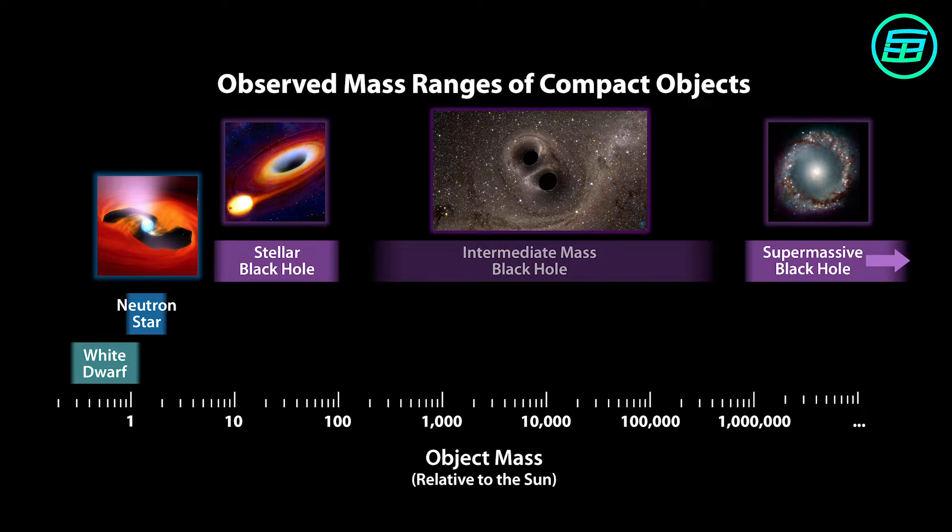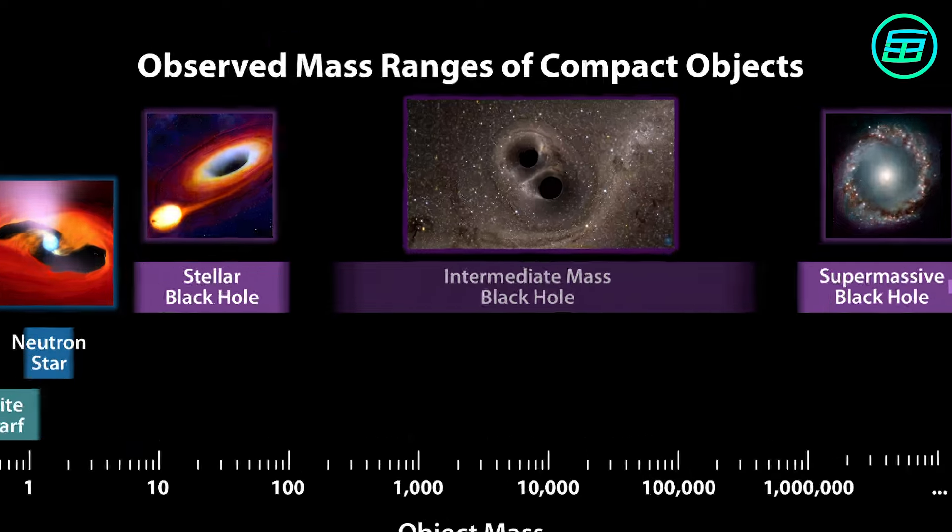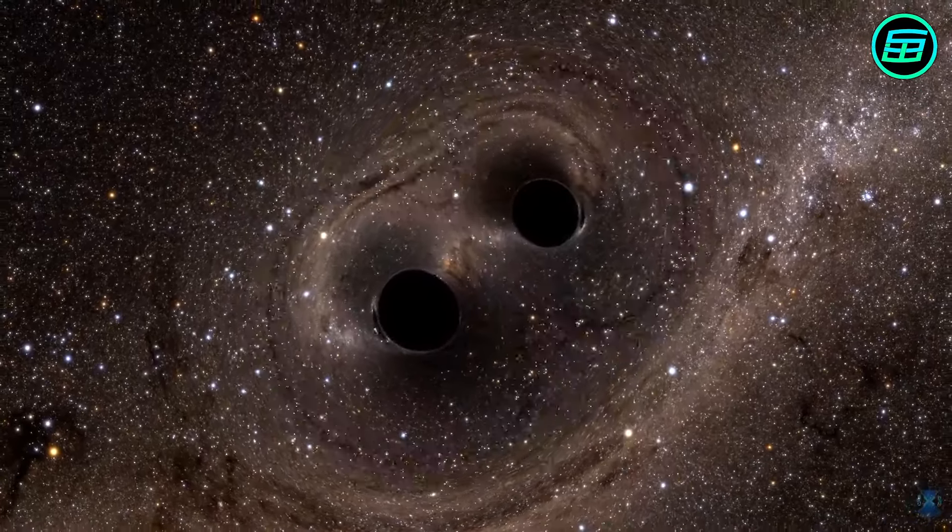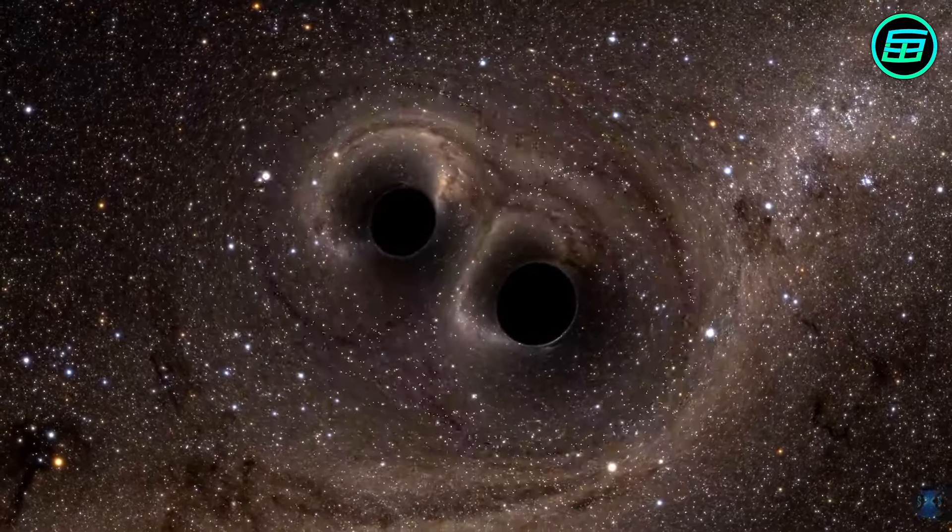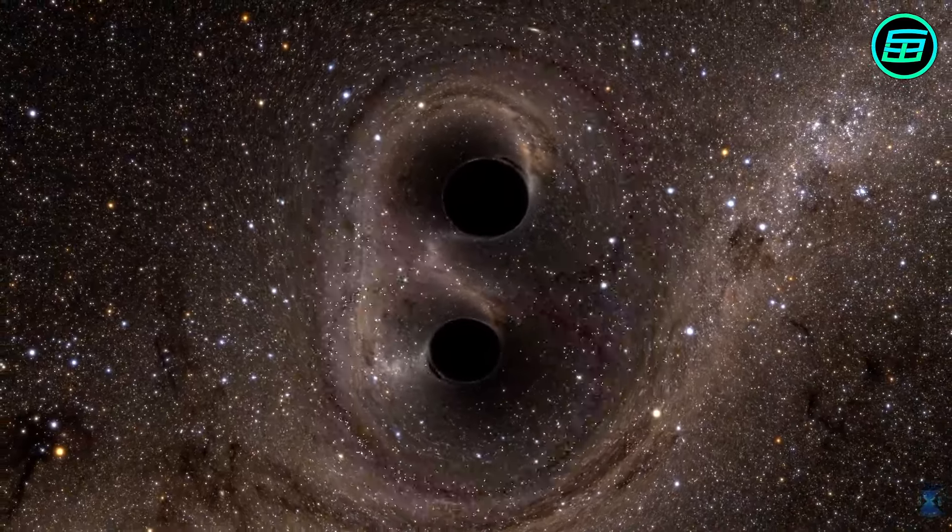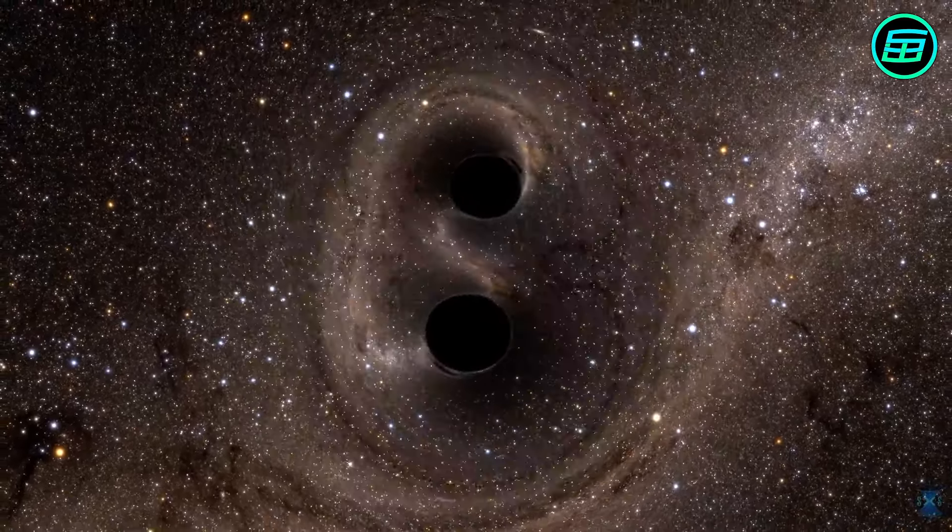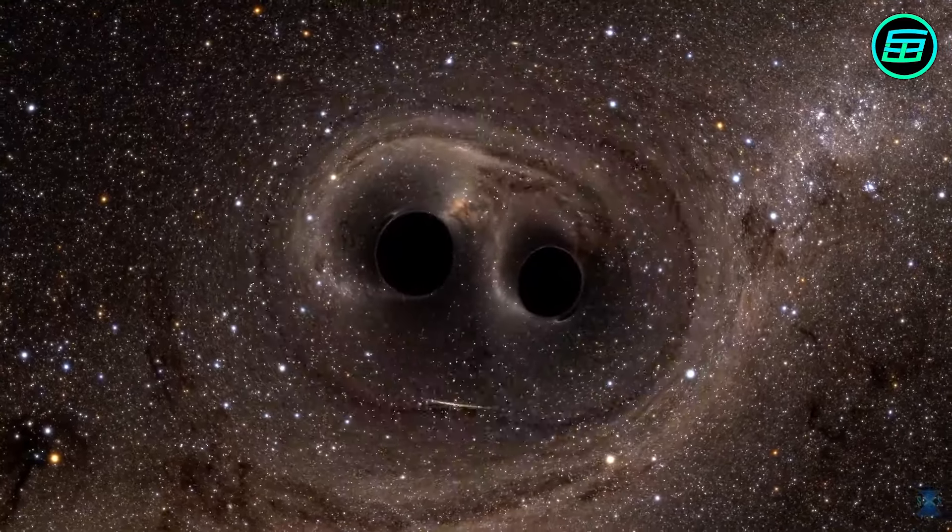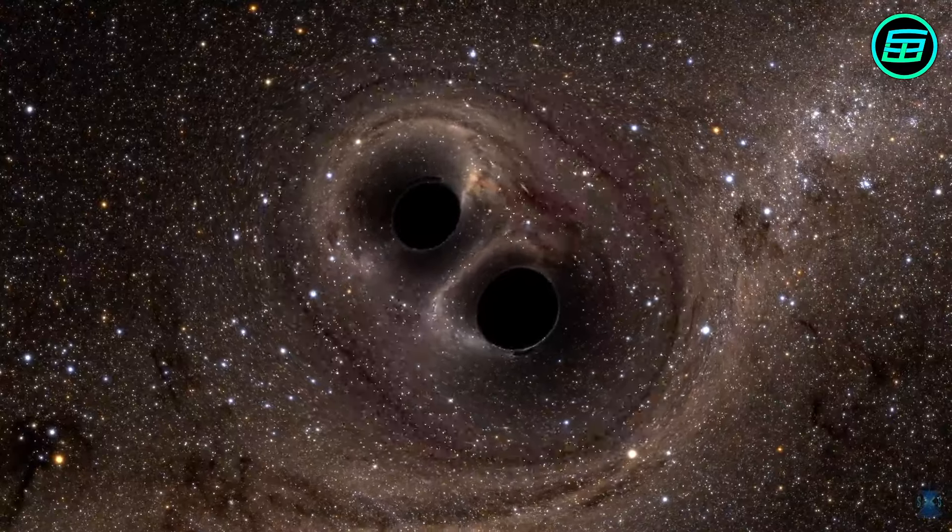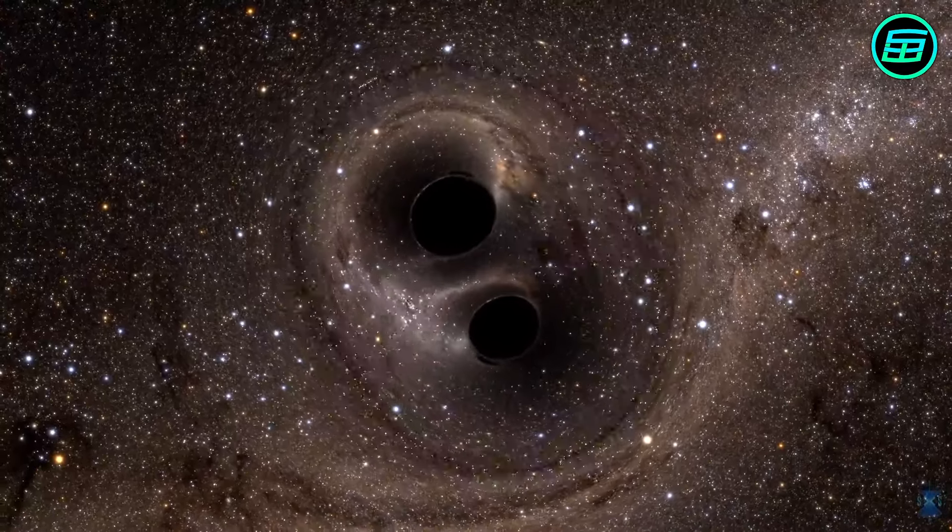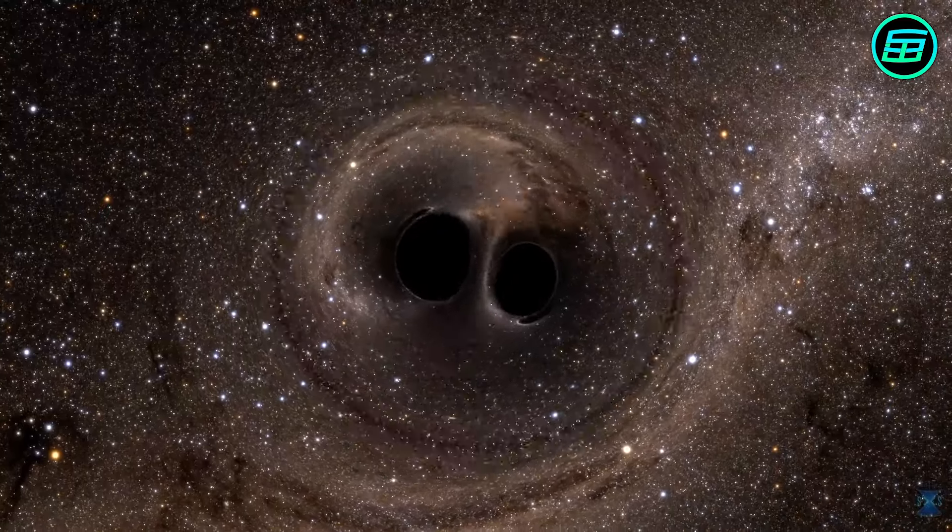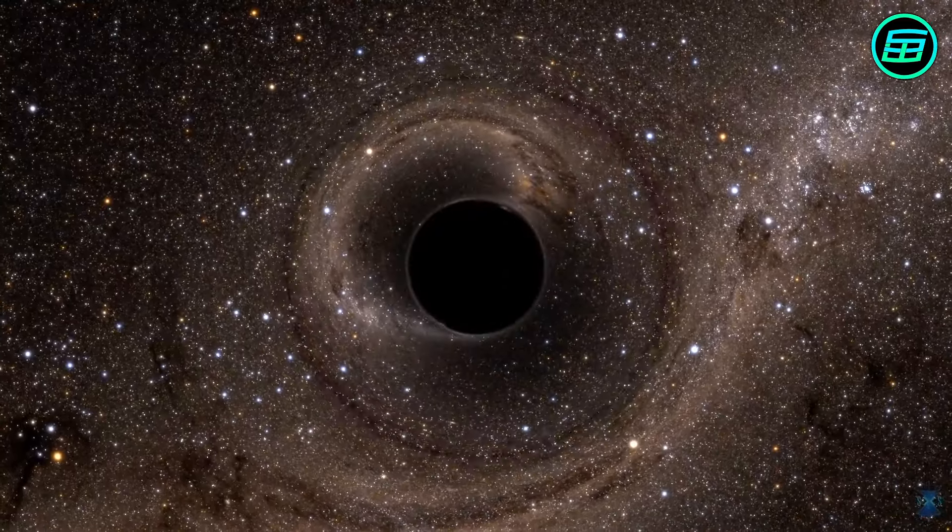There are also intermediate mass and supermassive black holes. In September 2020, astronomers announced that they'd observed a record-breaking merger between two black holes. One was 66 times the mass of the sun, and the other 85 times. The merger took place about 7 billion years ago and was detected because of the gravitational waves that it gave off, and that have only just reached us here on Earth.